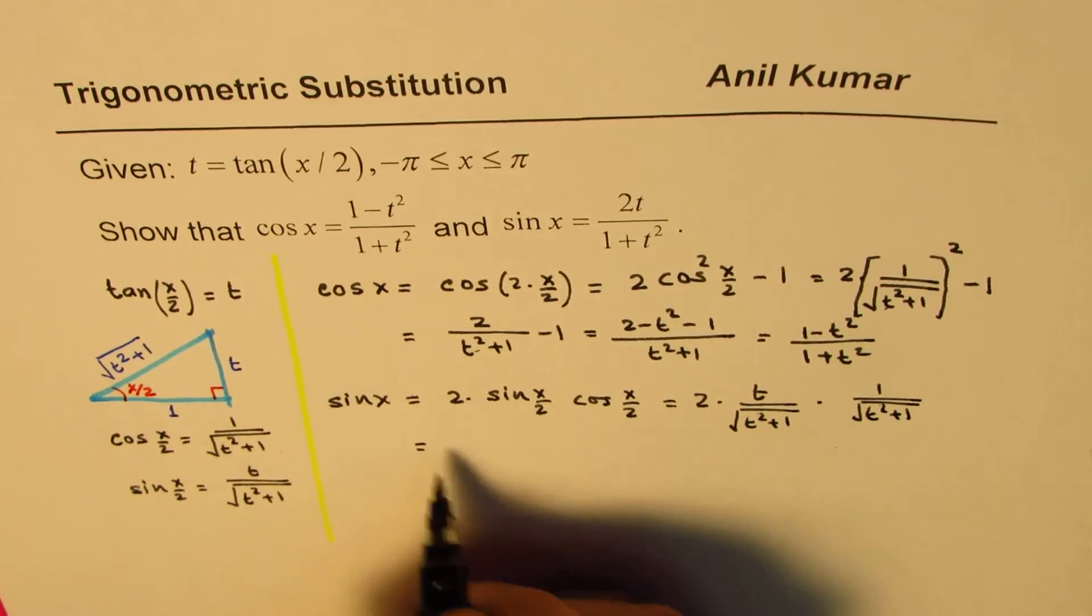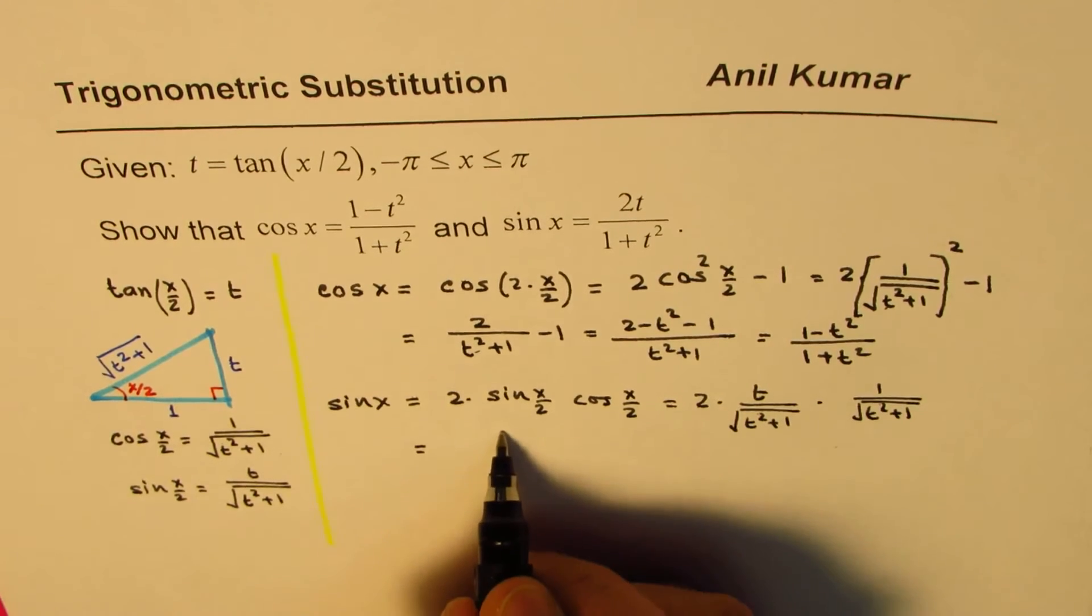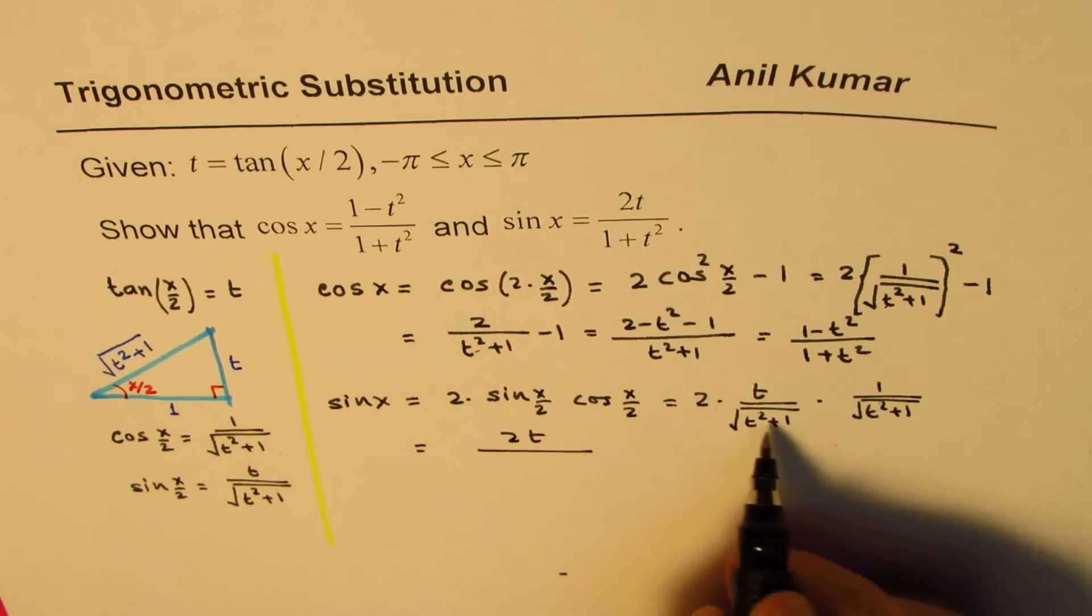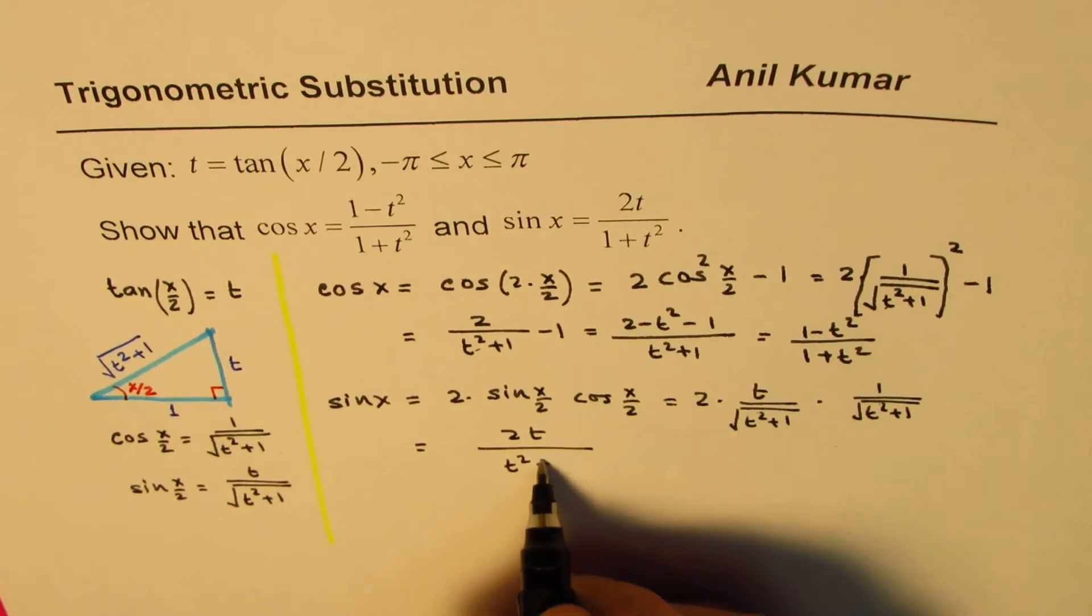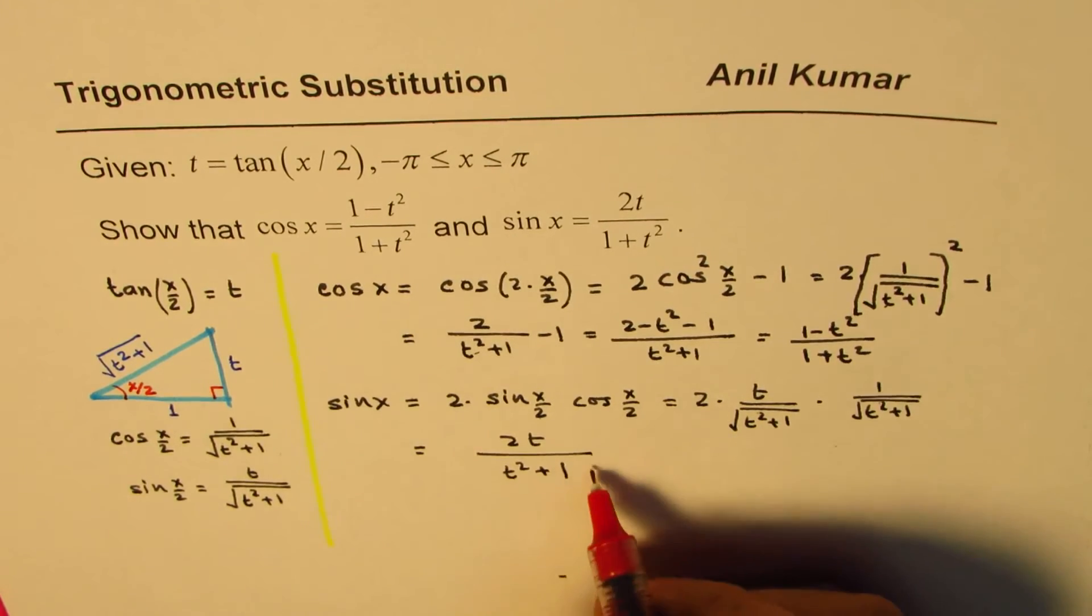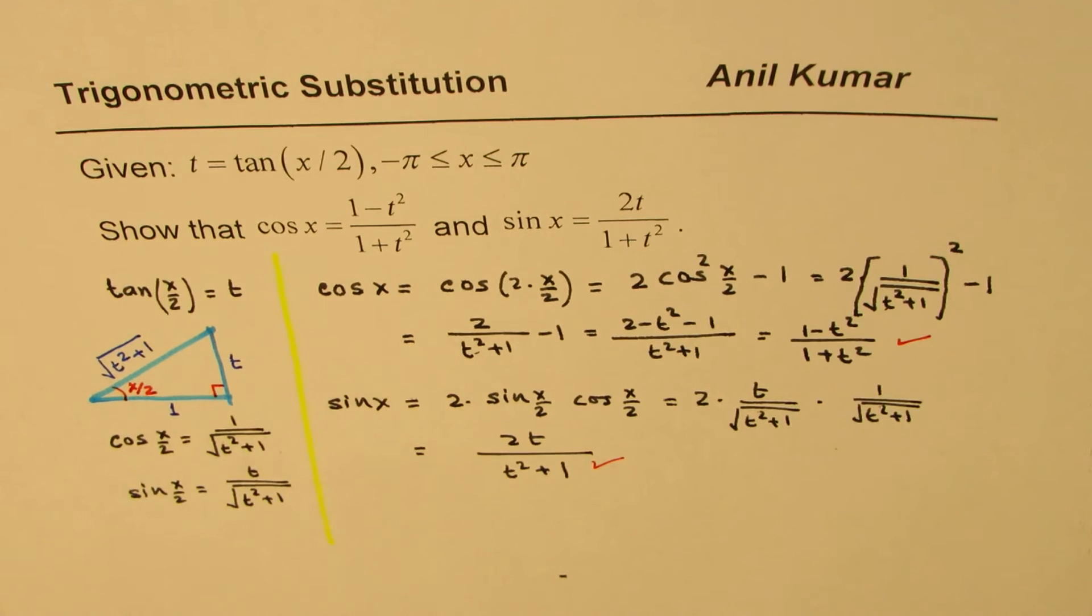And cos(x/2) is 1 over square root of t² plus 1. And when you multiply these, you get 2t on the top, which is expected. And the denominator is t² plus 1. And that gives you the formula which is required. So these are the two standard formulas, which we have derived in this particular video.